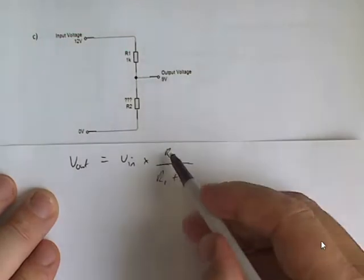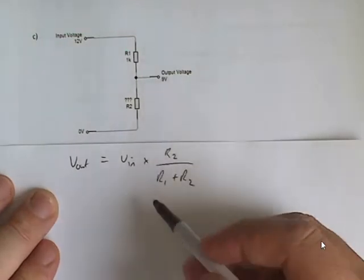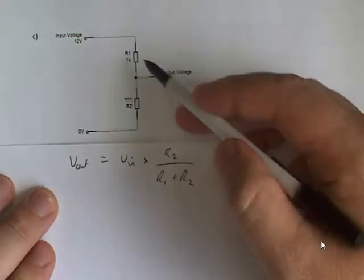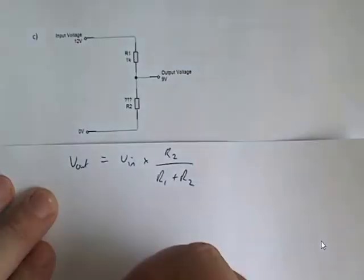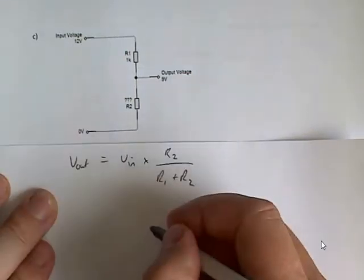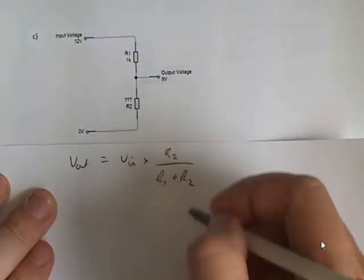In this case we don't know R2, but we do know V out and V in, so I can substitute them in, and I'll need to rearrange slightly. So let's rearrange the equation to get R2 on its own.